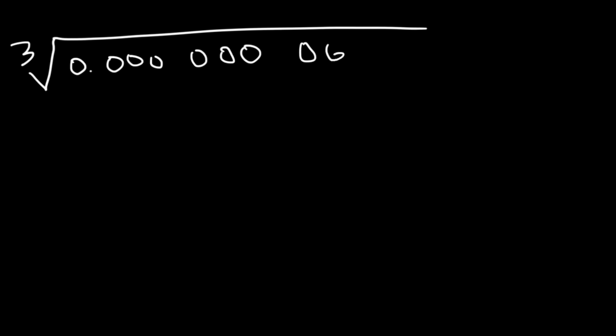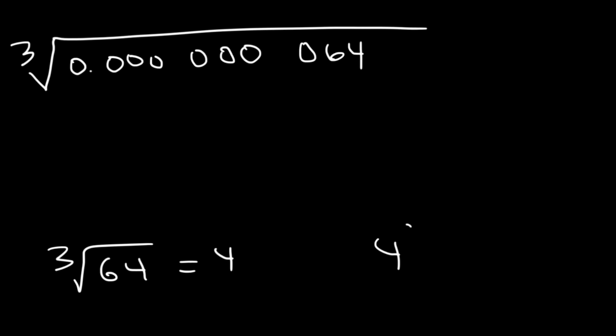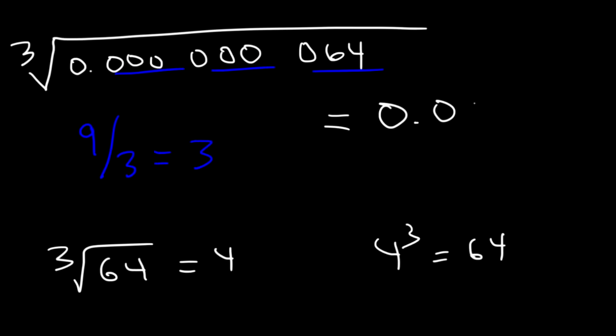Here's the last example for today. What is the cube root of 0.00000064? The cube root of 64 is 4 because 4 to the third power is 64. In this example we have 9 digits; 9 divided by 3 means the final answer should contain 3 digits to the right of the decimal. So the final answer is going to be 0.004.